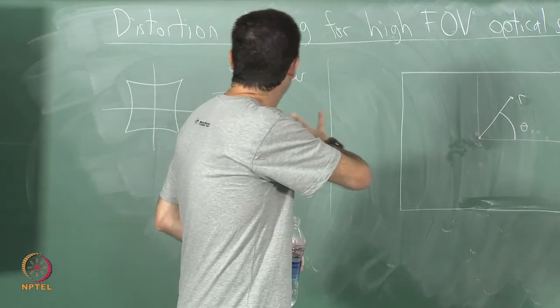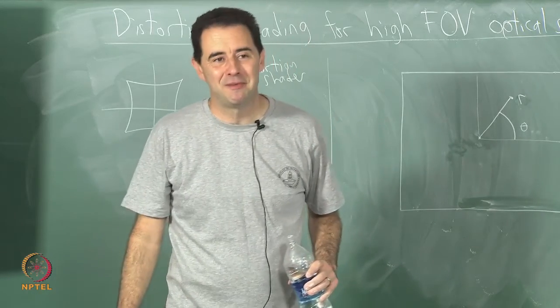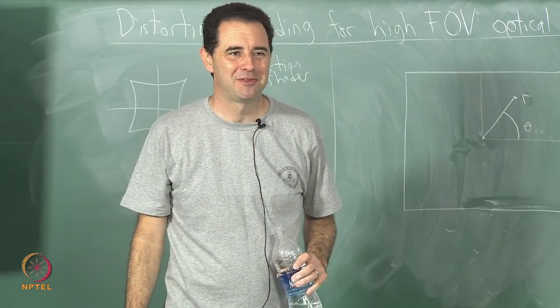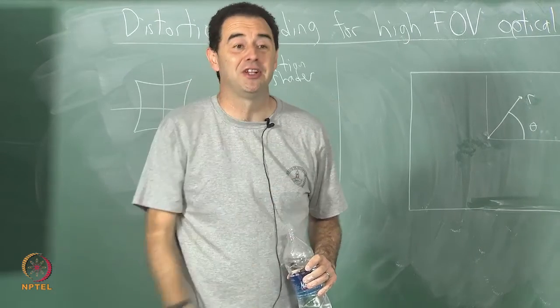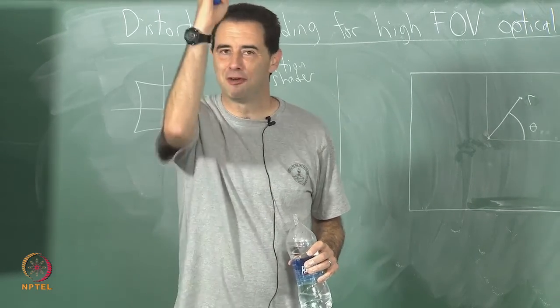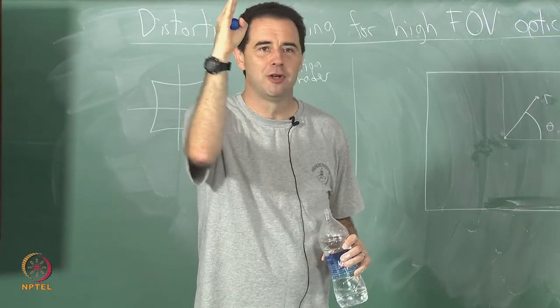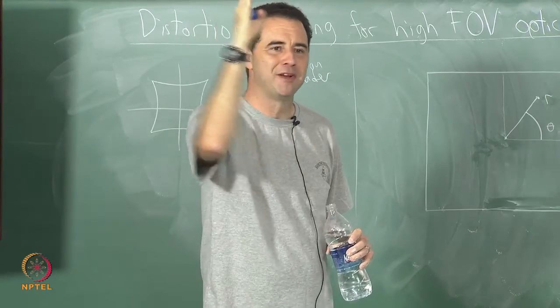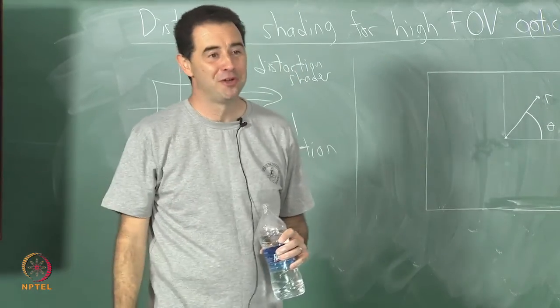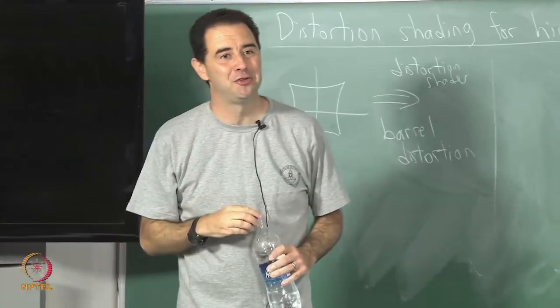Doing this distortion shading is better than not doing it, but it is still not perfect. That is why I encourage you to go and look and see if you can still see lens distortions. Take a look at a vertical line, move your head back and forth, and do this vestibular ocular reflex motion. See if it looks like the line is warping as you move. You should train yourself to look for that problem.